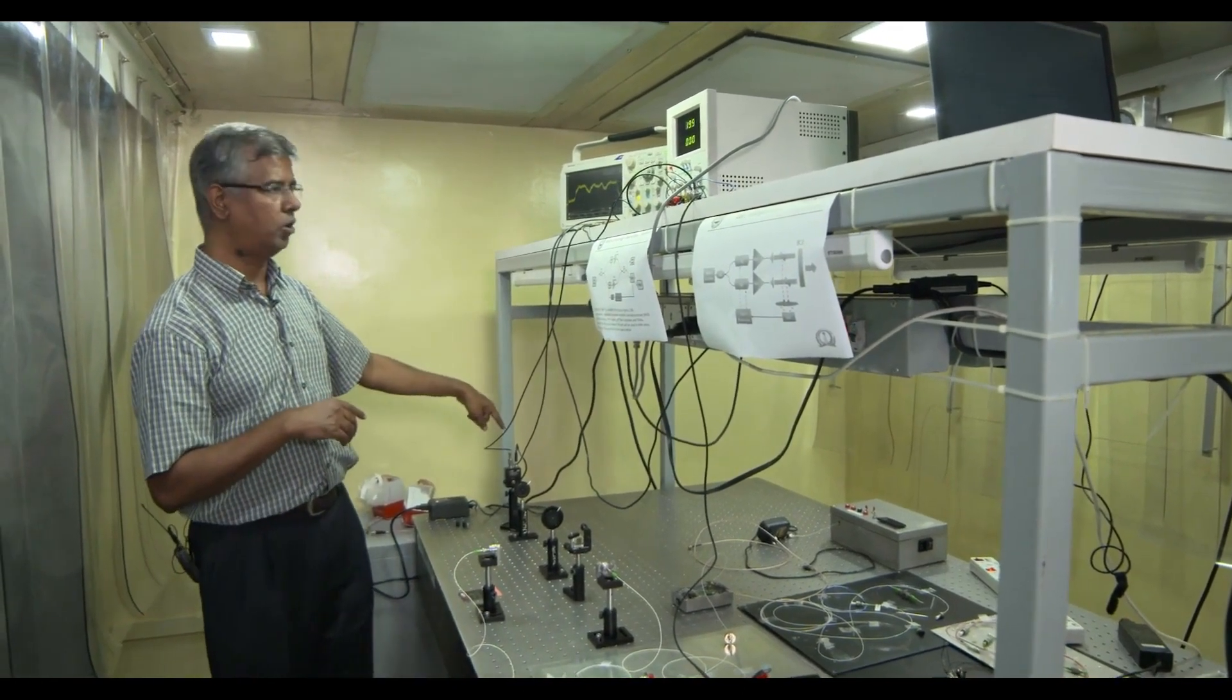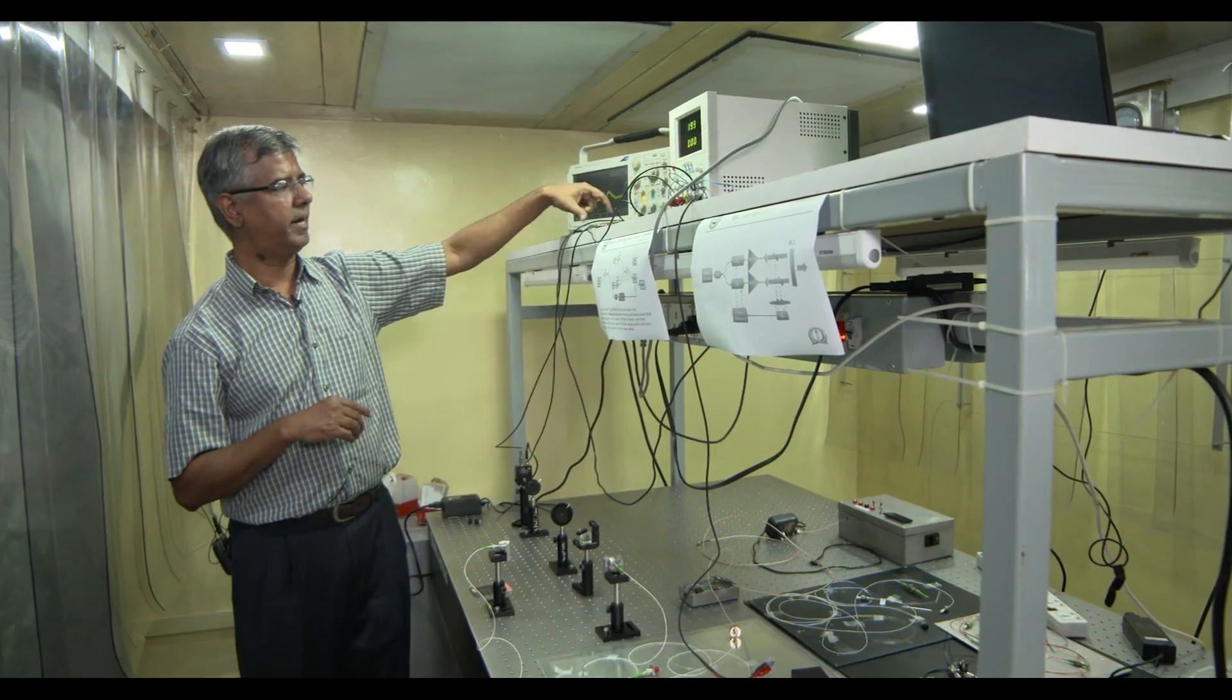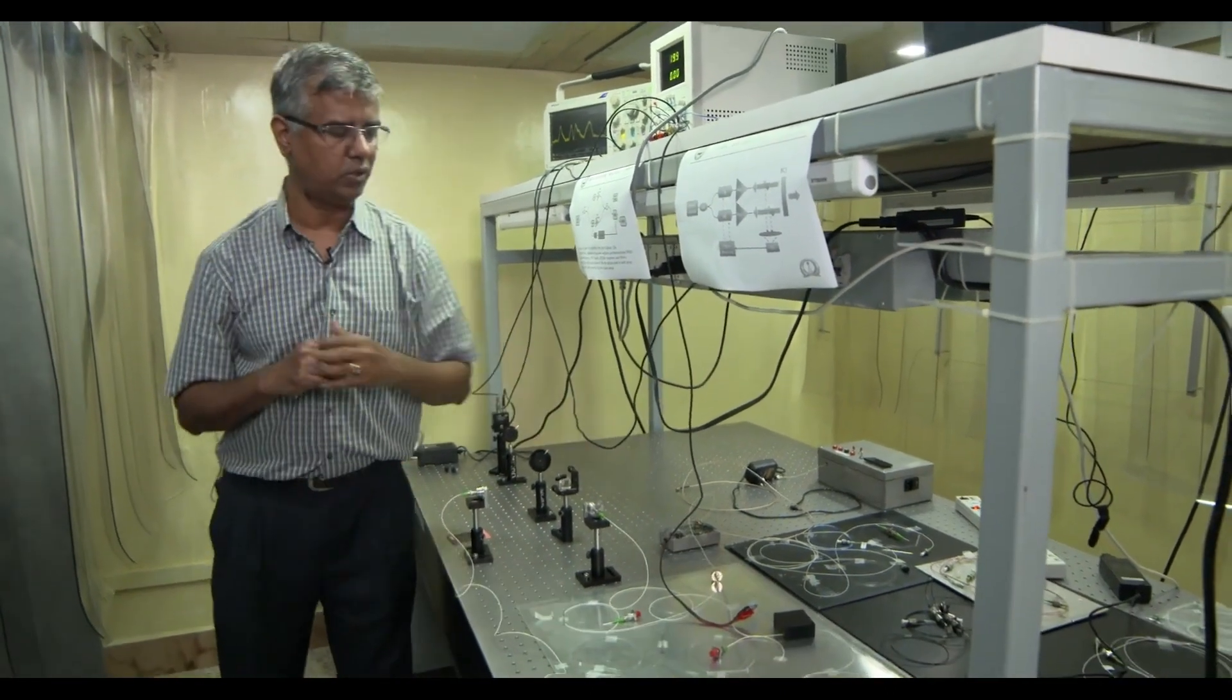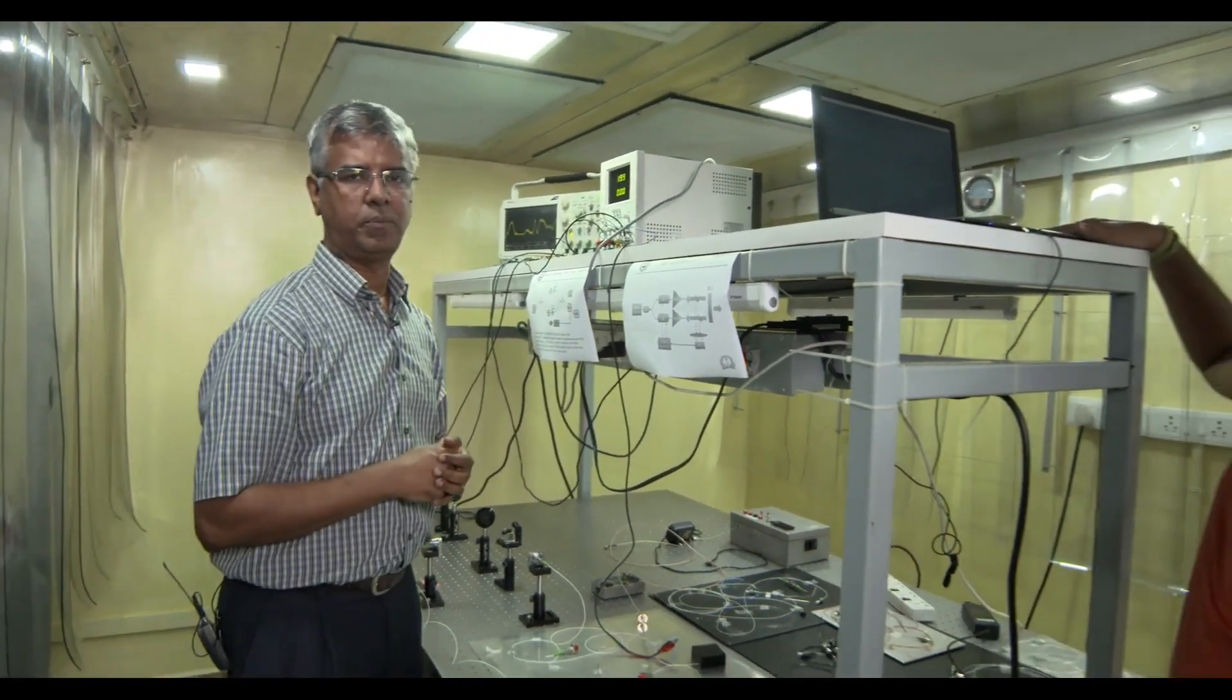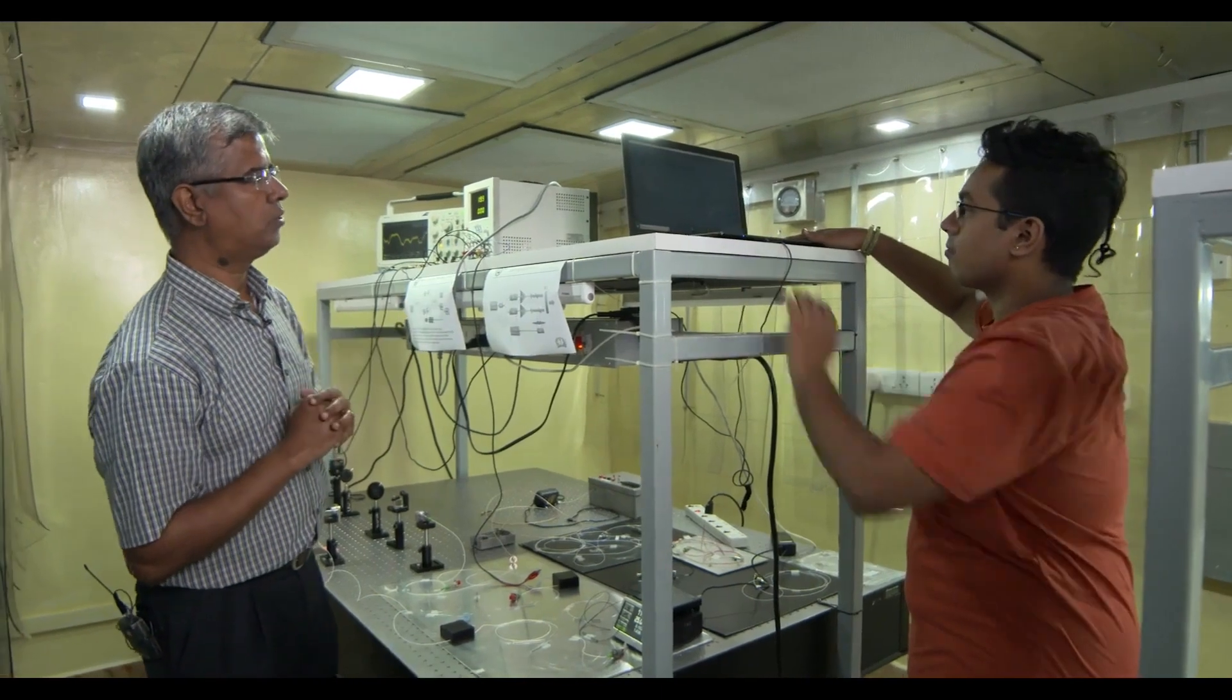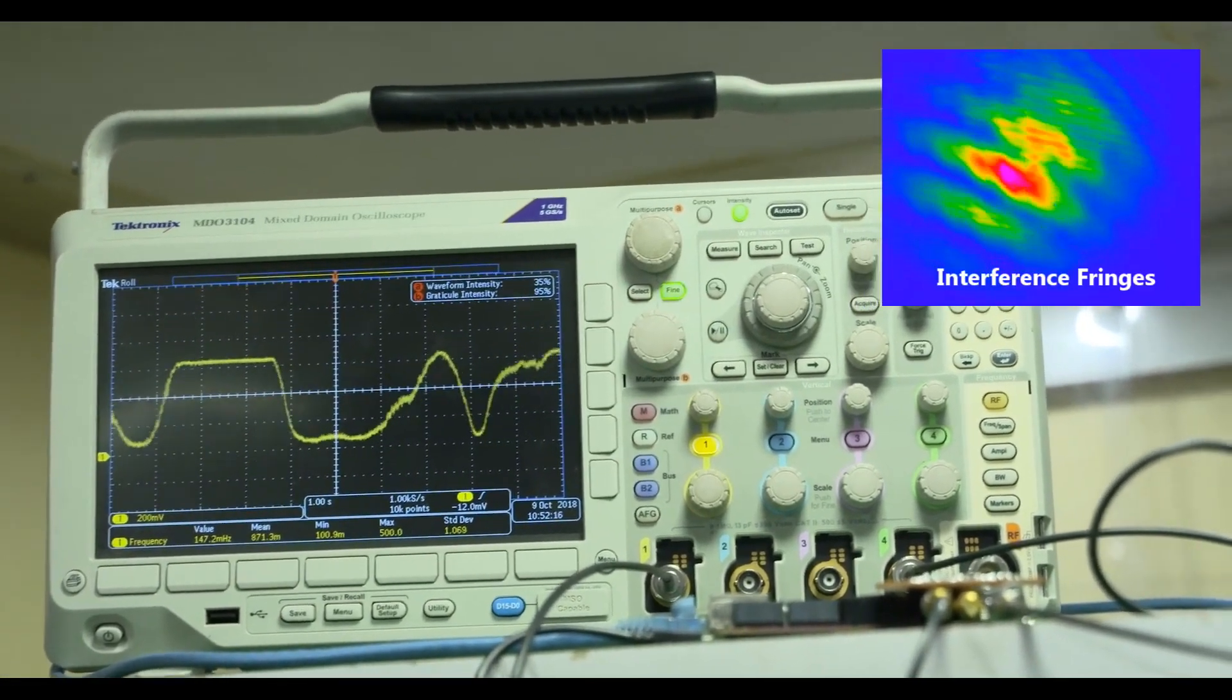So this is the feedback loop, part of this output is going through this circuitry over here. This is actually what is called a Red Pitaya controller board and through that controller board we are actually generating some voltages which is fed back into that phase manipulator over there. So Padmanabhan here is a project associate that is working on doing all this control circuitry. So he is going to now turn on the controller and then immediately after that what we will see is that the output is going to be stabilized.